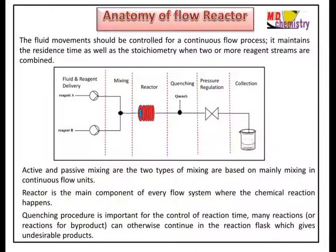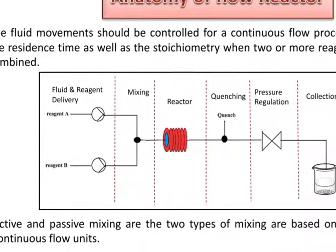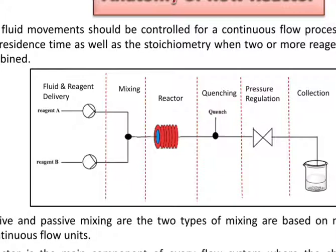Now the anatomy of a flow reaction. From a technical point of view, continuous flow is more complex — fluid movement must be controlled to maintain residence time and stoichiometry when two or more reagent streams are combined. The components include: fluid and reagent delivery where the sample is loaded, a mixing chamber, a reactor where the actual reaction happens, quenching to stop the reaction at a particular time, a pressure regulator for maintaining or adjusting pressure, and collection in a beaker.